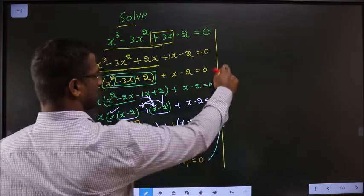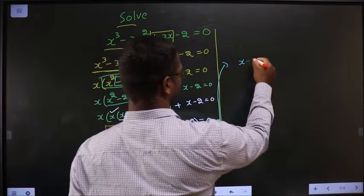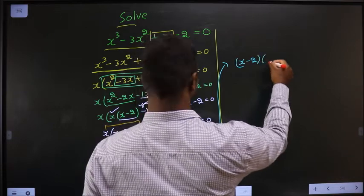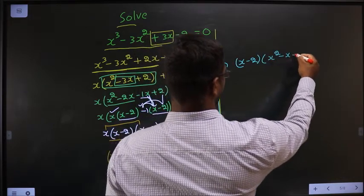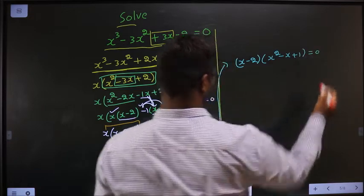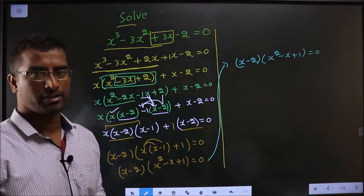I write this here. x minus 2 times x square minus x plus 1 equal to 0. What should we do? Again there is a quadratic. So factorize it, means changing the middle term. But understand here.